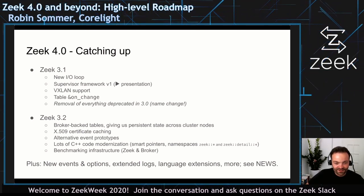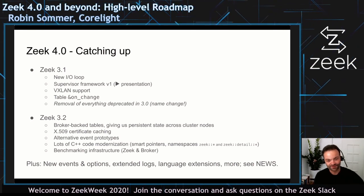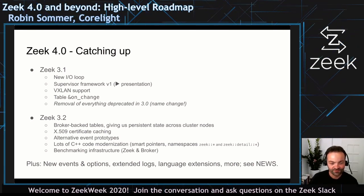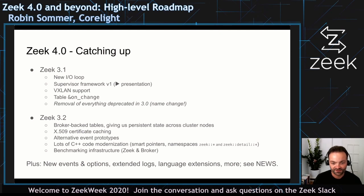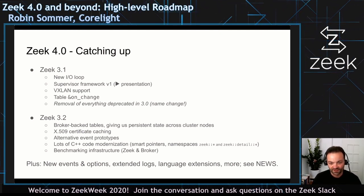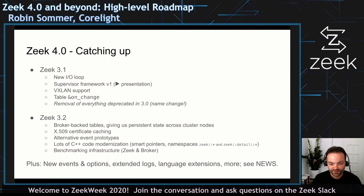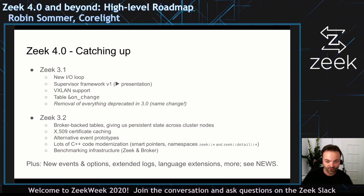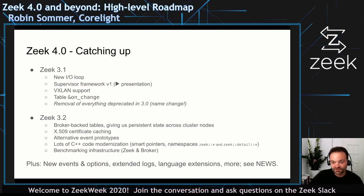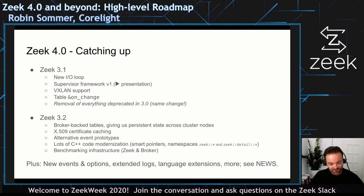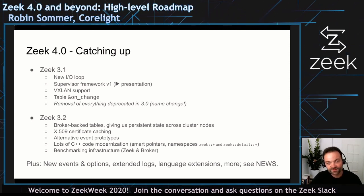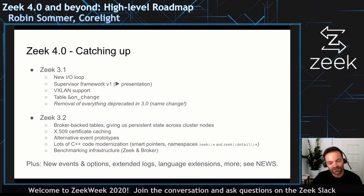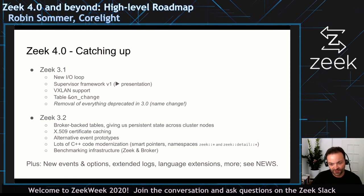If you're used to the Zeek codebase as it used to be and you look at the current versions, a lot of things have been changing for the better — in the sense of being more modern and more safe. We've switched a lot of code over to smart pointers for manual reference counting, and introduced the namespaces Zeek and ZeekDetail, which makes it easier to work with third-party code and also ties back to our LTS guarantees.